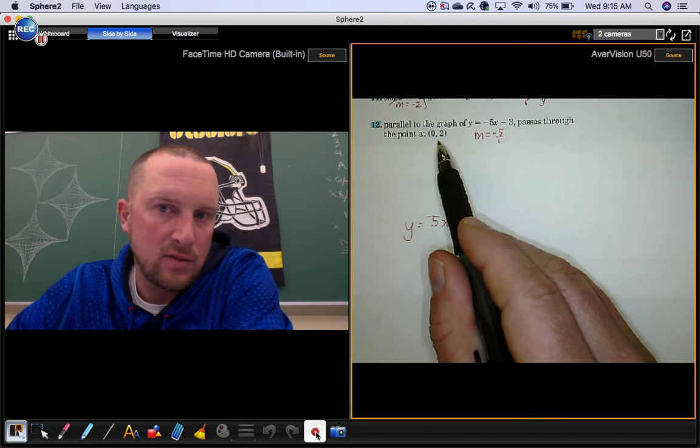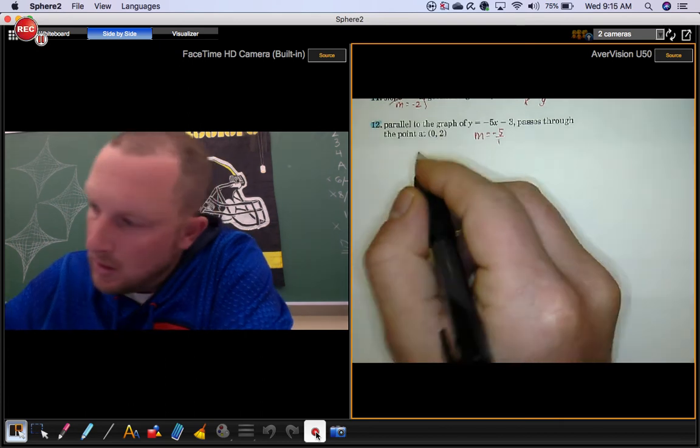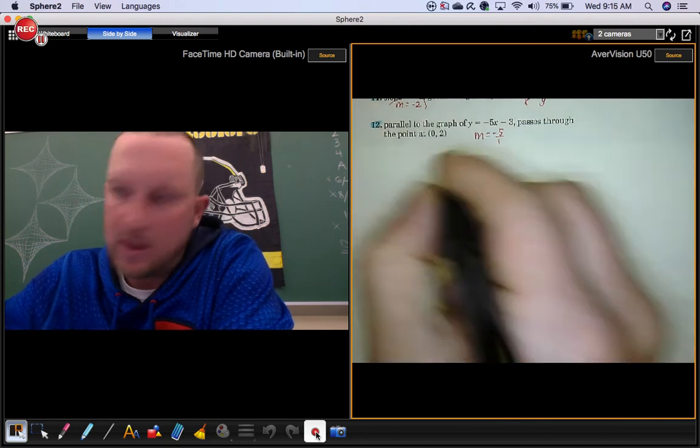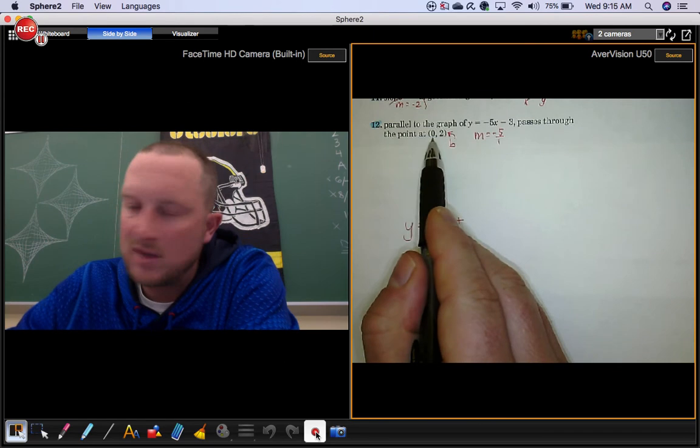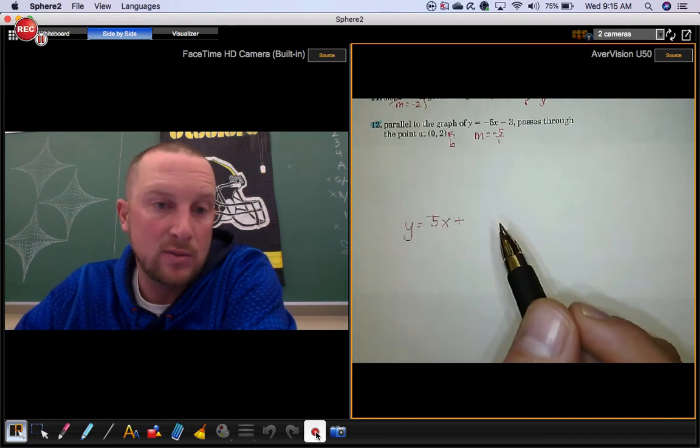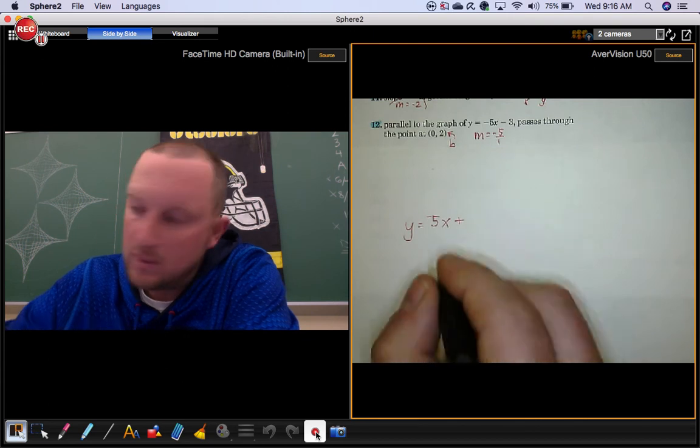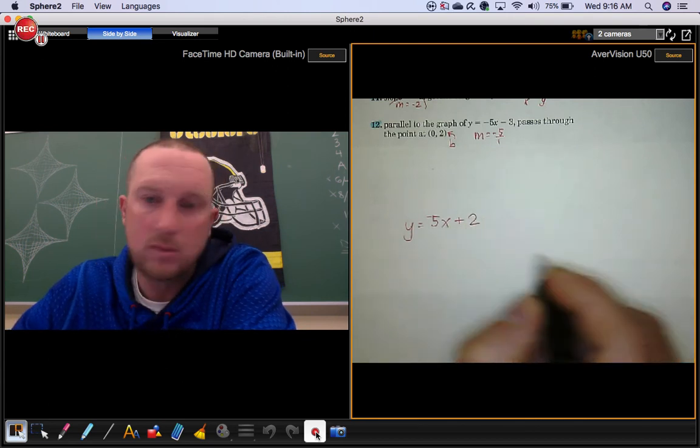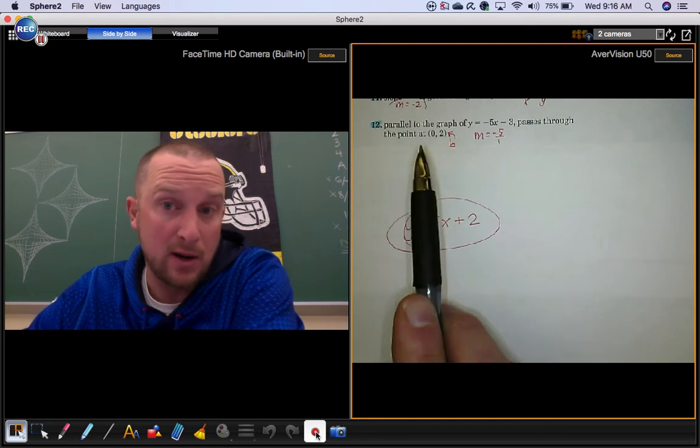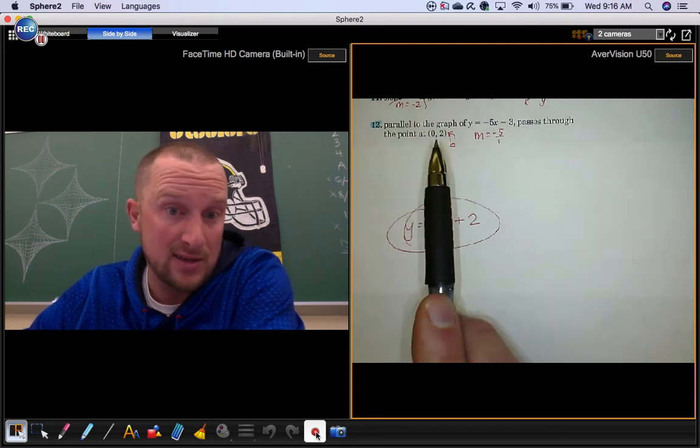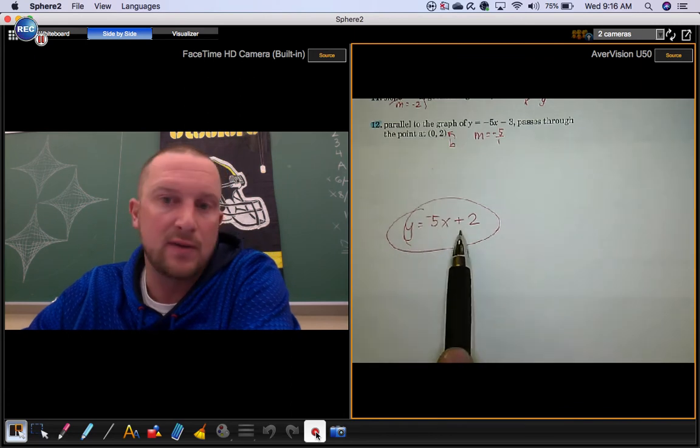What you need to put here is the y-intercept. Is this the y-intercept, or is this just a random point? This is the y-intercept. That's because the x value is 0. Anytime that happens, this is your y-intercept: 2. Here's your answer. This is the equation of a line that's parallel to this one and has this point on it. y equals negative 5x plus 2.